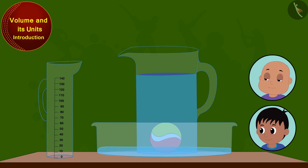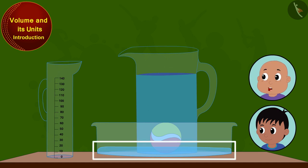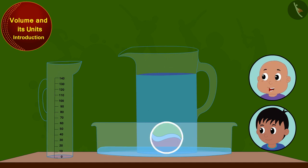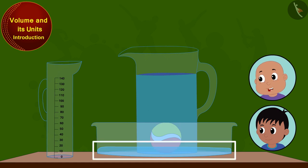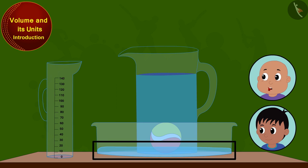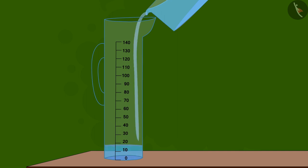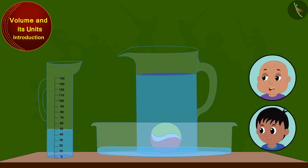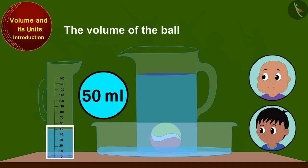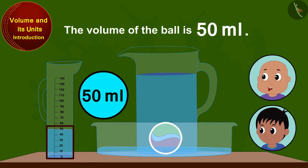Bablu explained: the ball tries to make its space in the jug, so the water spills out. The more space the ball tries to take inside the jug, the more water spills out — this is called its volume. Since 50 milliliters of water spilled out of the jug, we can say that the volume of the ball is 50 milliliters.